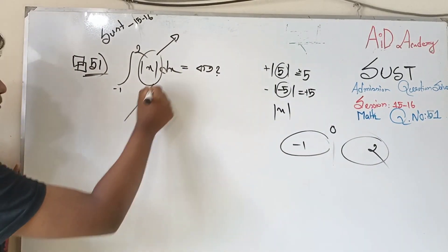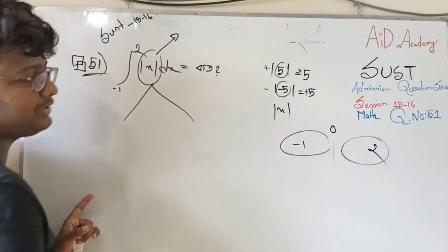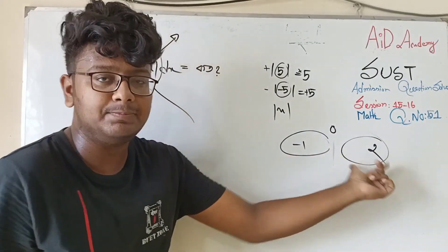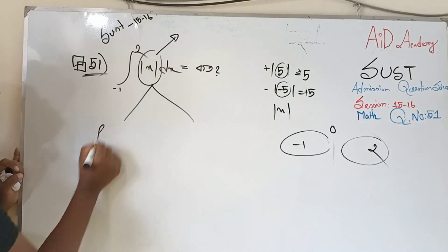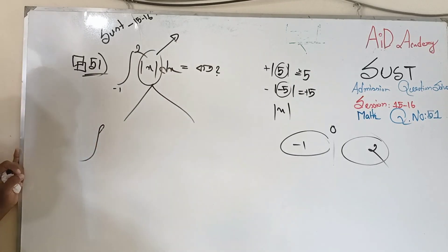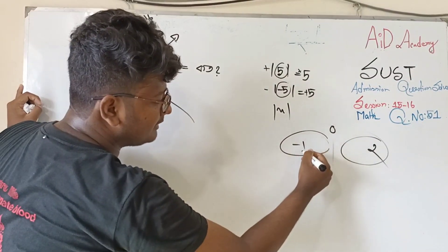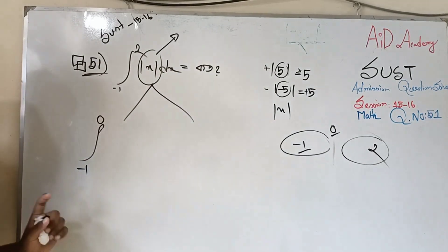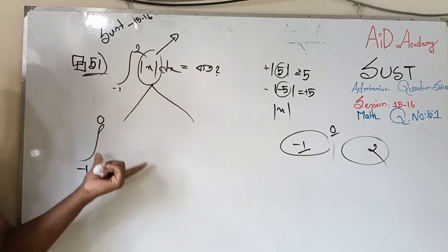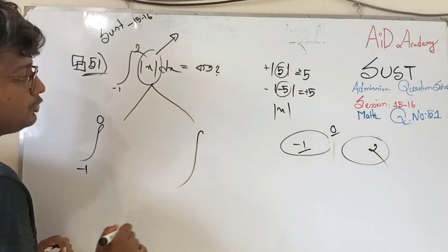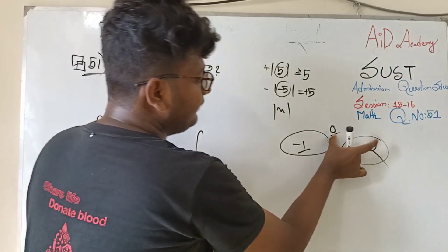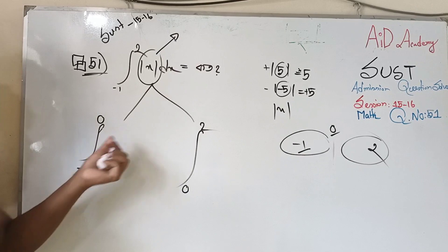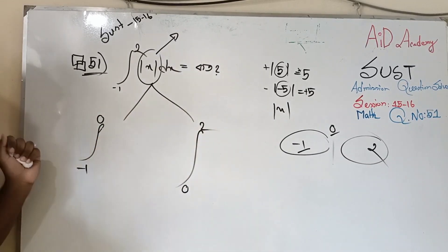Now we will split — split means there are two parts. Why do we do that? Because there are a negative portion and a positive portion. The first part is the negative portion. If we have the negative portion, we give the limit minus 1 to 0. For the positive portion, we give the limit 0 to 2. Then we split and take it.